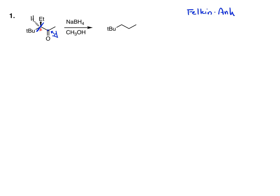Let's draw two Newman projections — that's what we always want to do. The carbonyl is pointed downward; we'll put C double bond O down on both. Then on the back carbon, perpendicular to the carbonyl, is our R large group. Let's classify our groups: we have a tert-butyl, an ethyl, and a hydrogen. Everybody would agree the tert-butyl is the large group, the ethyl is our medium-sized group, and the hydrogen is the small group.